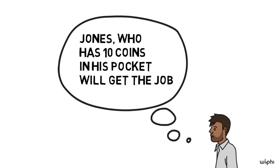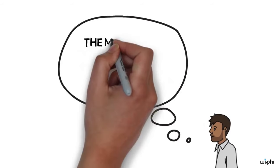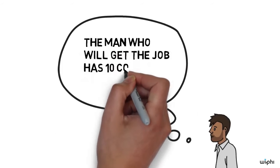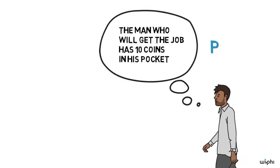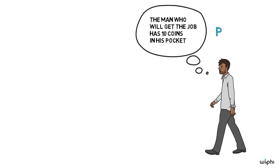From this, Smith concludes that the man who will get the job has 10 coins in his pocket, and that's our key proposition, P. Right now, it might seem that Smith even knows that P, knows that the man who will get the job has 10 coins in his pocket. But there's a twist.